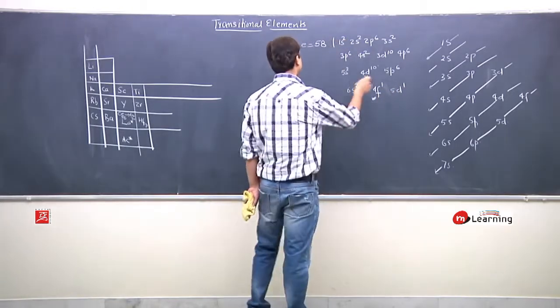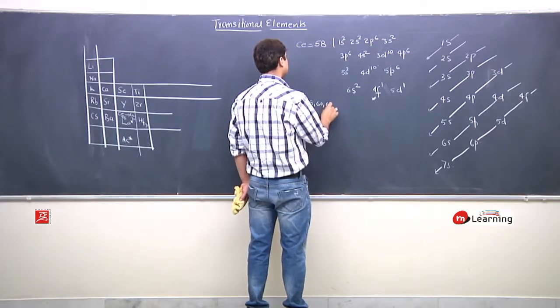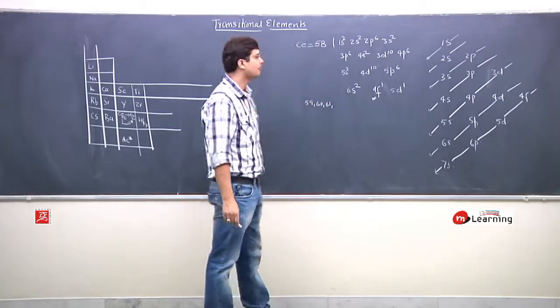Now next, when the element comes after Cerium, it is 59, 63, 61. In this way, you will increase each electron in each element. You will increase it in shells.